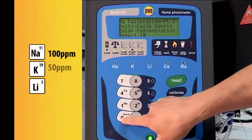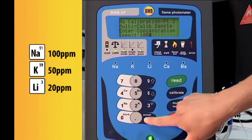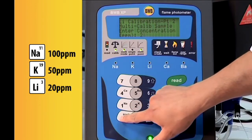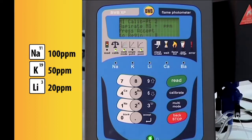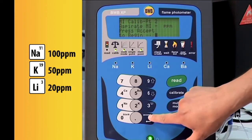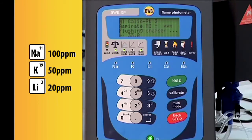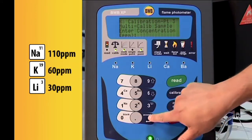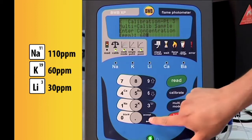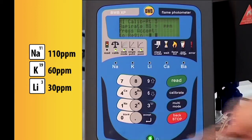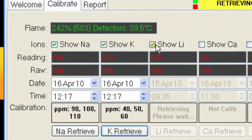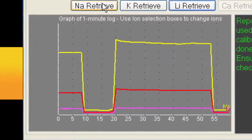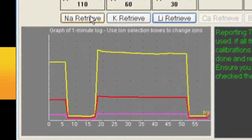We are now prompted for standard 2. Enter 100 for sodium, 50 for potassium, and 20 for lithium. Aspirate standard 2 and watch on the FPPC.